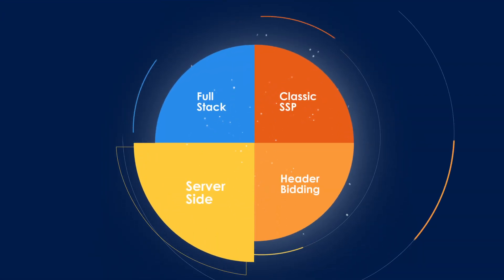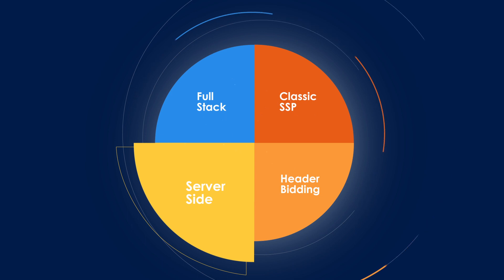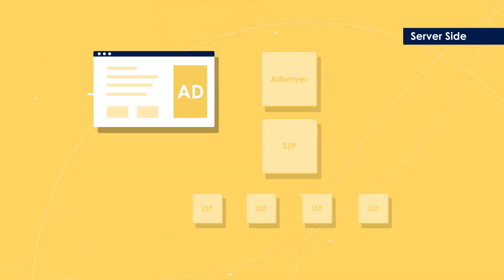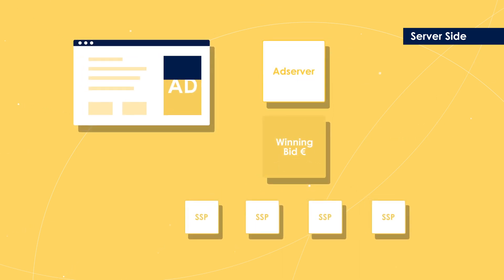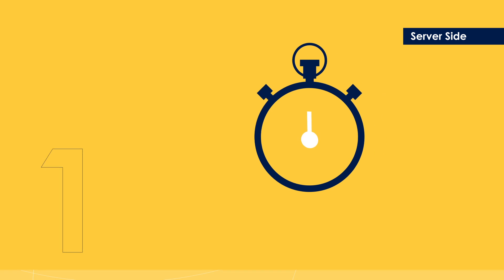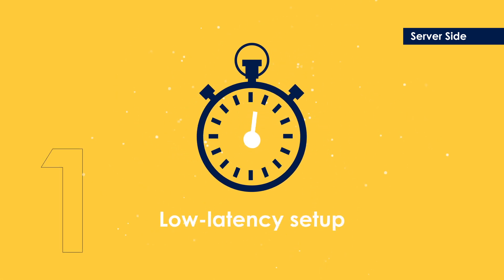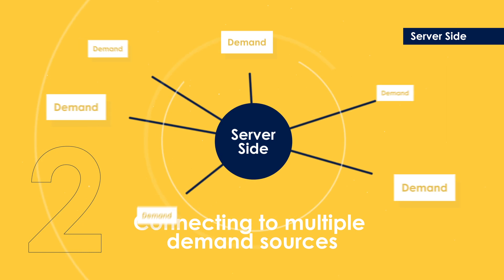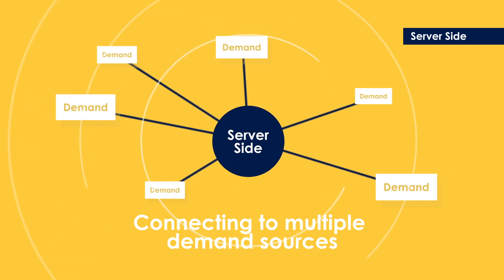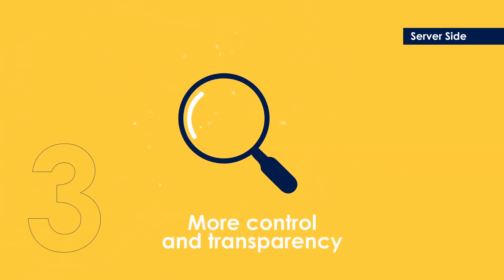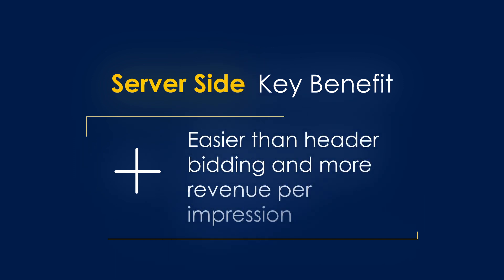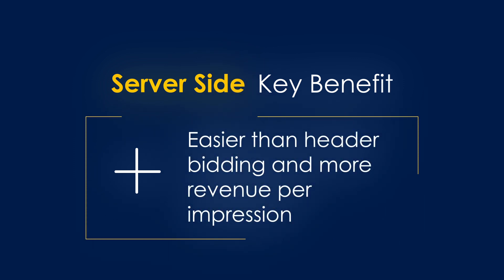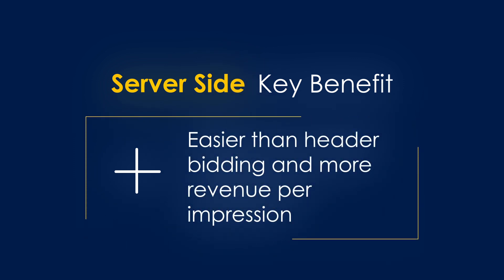The third setup is the server-side enterprise solution. It's like header bidding, but trading takes place on a single sell-side server. This is best if you want a strategic, low-latency setup that connects to multiple demand sources with more control and transparency. It's a close-to-holistic solution without changing the ad server. The key benefit? It eliminates the hassle of header bidding and scales up revenue per impression.